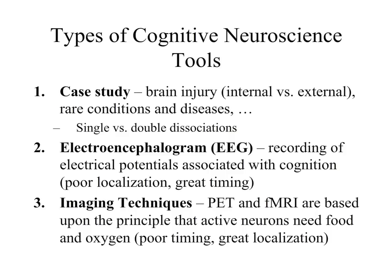Electroencephalograms are the recording of electrical potentials associated with cognition. The advantage is that they have great timing; the disadvantage is poor localization. Contrasting that with neuroimaging techniques — PET and fMRI — these are based on the principle that active neurons need food and oxygen. The disadvantage of these techniques is poor timing, but they have great localization.